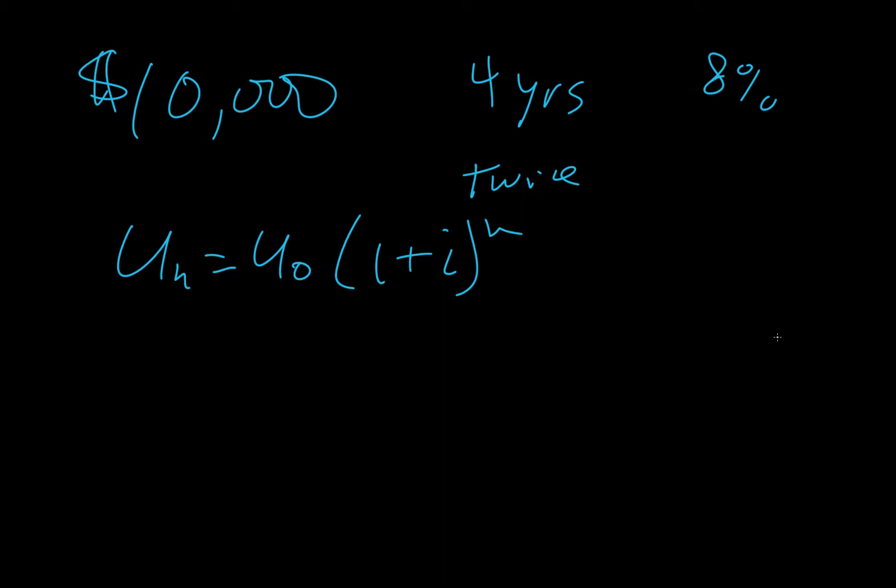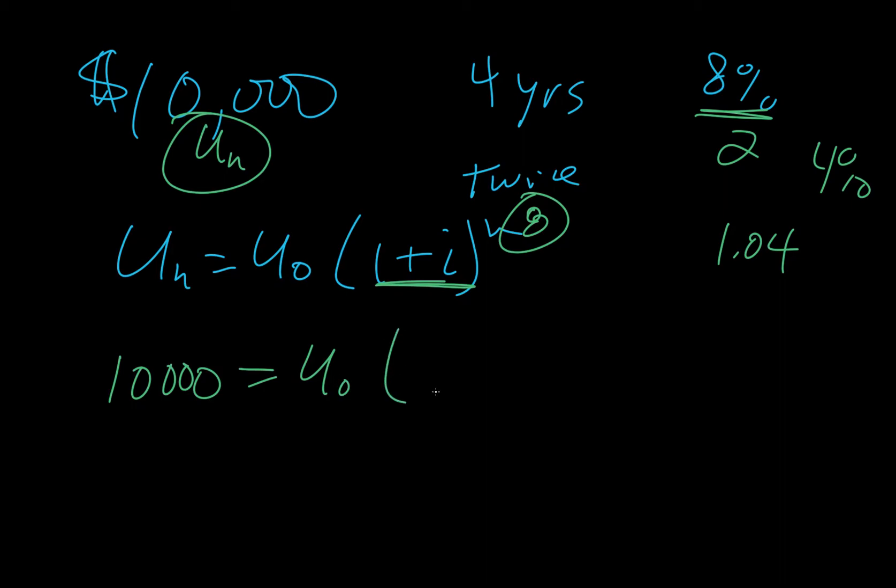This is actually our un. This, we need to multiply it by 2. So our n is actually 8. And then this, we need to divide by 2. And so we're going to get 4%. And so this piece is going to become 1.04. Alright. So we plug that all in. We get 10,000 equals u naught, 1.04. And then we're going to raise that to the 8.